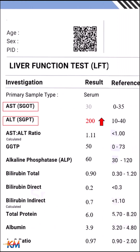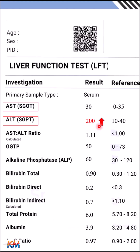If AST is elevated alone, this indicates muscle diseases, as AST is present in high concentration in both muscle and liver.